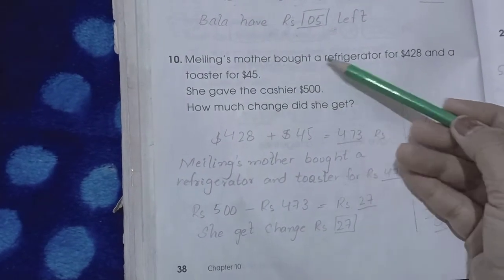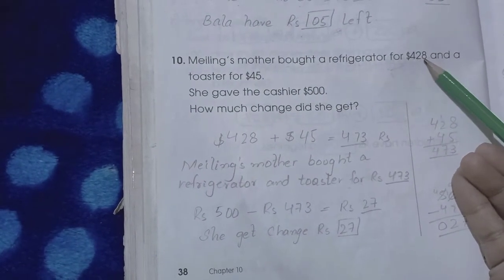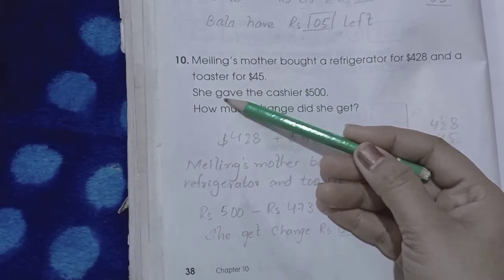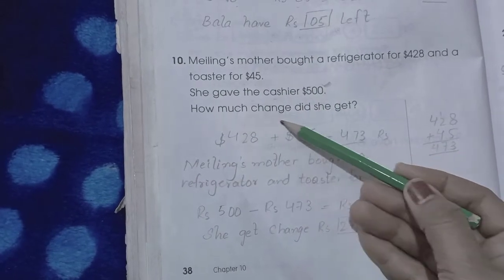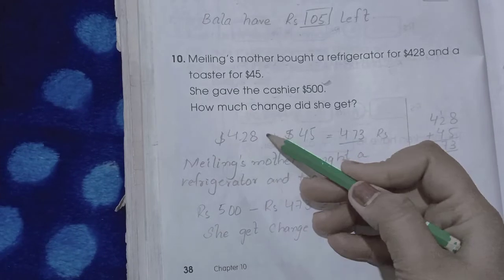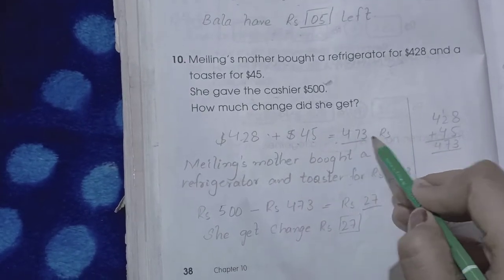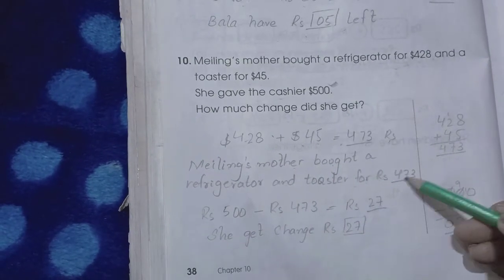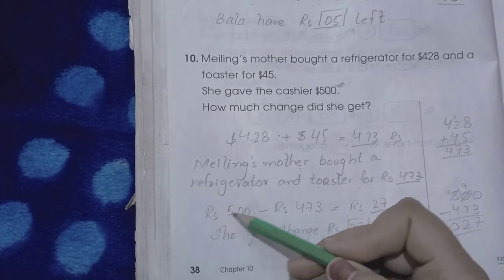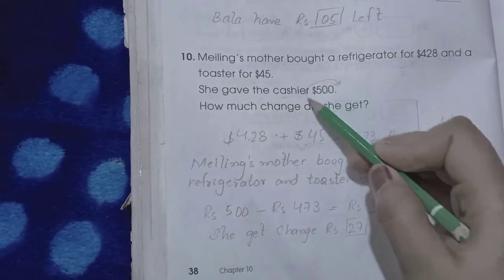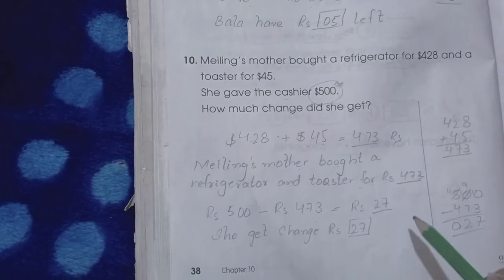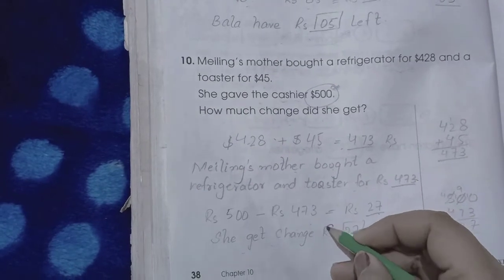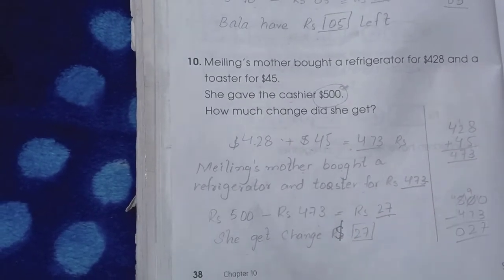Number ten: Meiling's mother bought a refrigerator for $428 and a toaster for $45. She gave the cashier $500. How much change did she get? 428 plus 45 is 473 dollars. Meiling's mother bought a refrigerator and toaster for $473. Now from the total amount of $500, she spent $473. The amount left is 27. She gets change of $27.